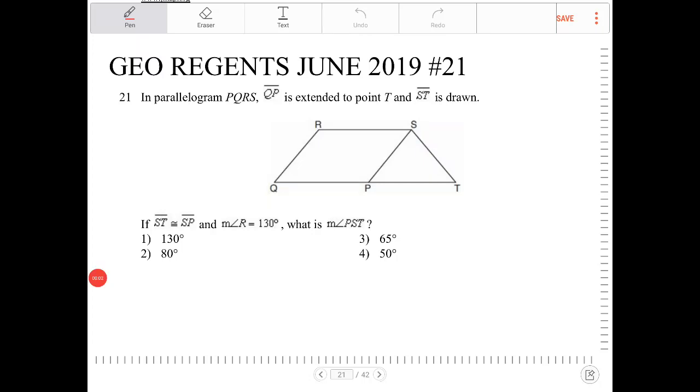In the parallelogram PQRS, QP is extended to point T, and ST is drawn.